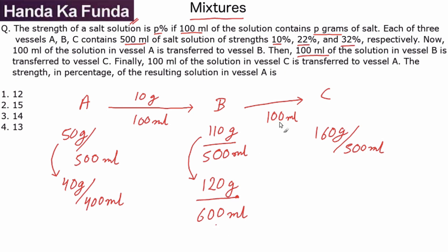So out of 600 ml, 100 ml is going, so out of 120 grams one-sixth of that or 20 grams will go, which means C which was 160 grams earlier will now become 180 grams because this 20 grams will get added to this and the total quantity of the solution, 100 ml will get added to 500 ml. So this will now become 600 ml. This is the final value in C.